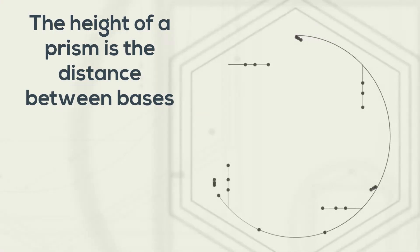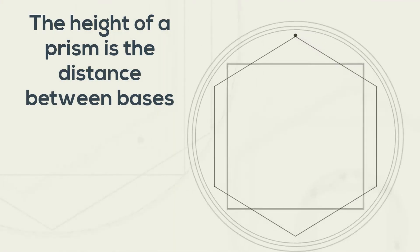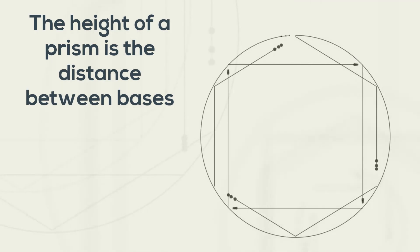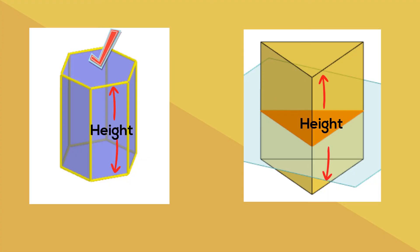The height of a prism is the distance between the two bases. So let's take a look at this. On the left you have the hexagonal prism. Notice the height distance between the bases and the same with the triangular prism on the right.